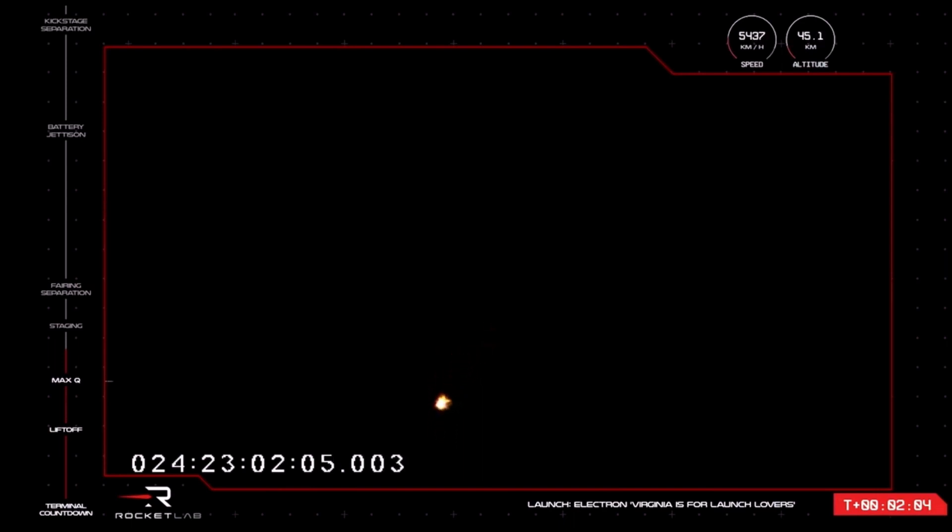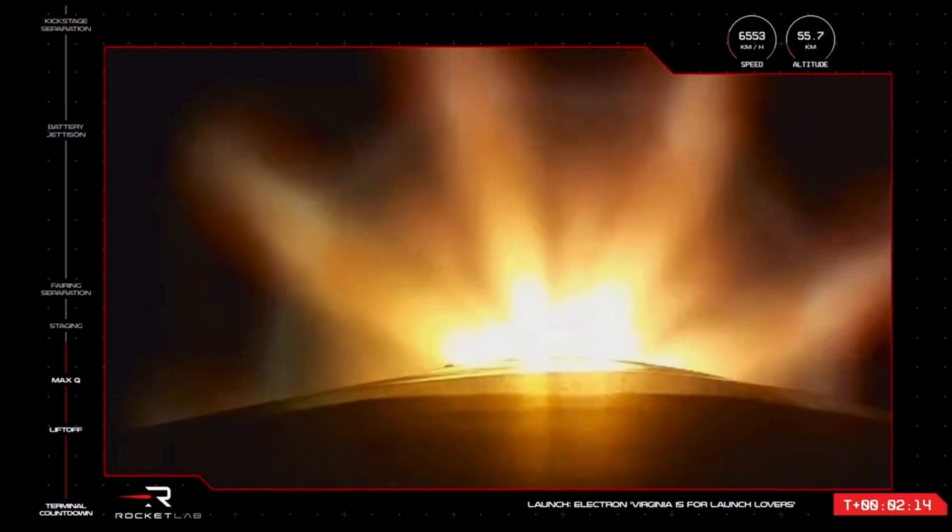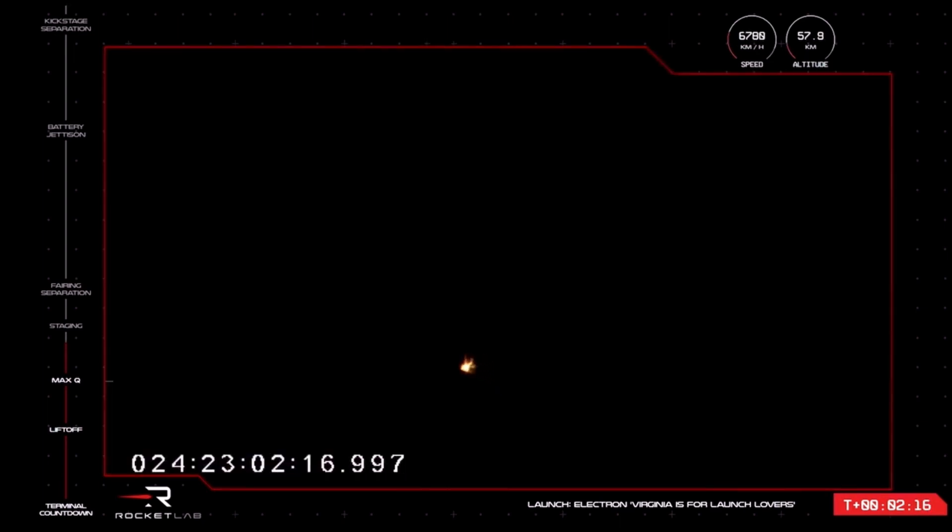Which then allows the Rutherford engine on the second stage to fire up and continue with the mission to low Earth orbit. The events are called out for mission control as MECO, stage separation, and stage 2 engine ignition. Meanwhile, those nine Rutherford engines are continuing to propel Electron at more than 6,000 kilometers per hour, 2 minutes and 10 seconds into flight of Virginia is for Launch Lovers.